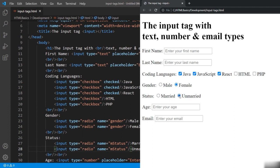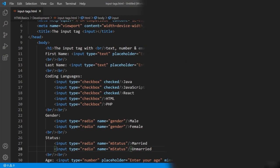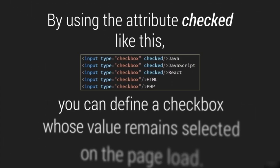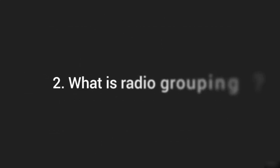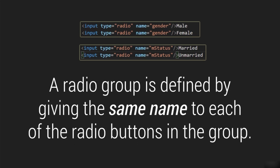This is the basic idea about checkbox and radio button — we will use them a lot when we create forms in the forthcoming advanced sections. Let's talk about relative questions. How can you define a checkbox whose value remains selected on page load? By using the 'checked' attribute you can achieve this. The second question is: what is radio grouping? Radio grouping is basically giving the same name to multiple options. If you give the same name, out of those radios the user is allowed to select only one — the rest from the same group will be automatically deselected.